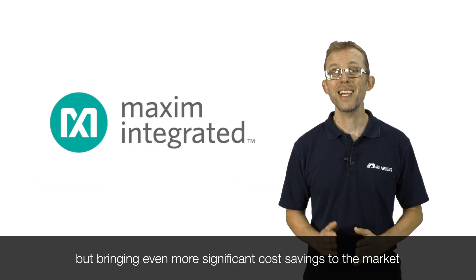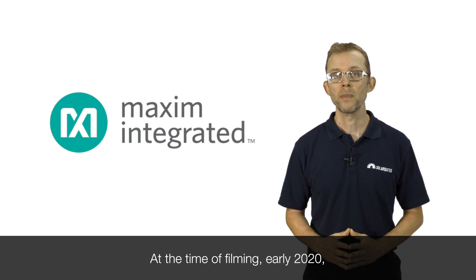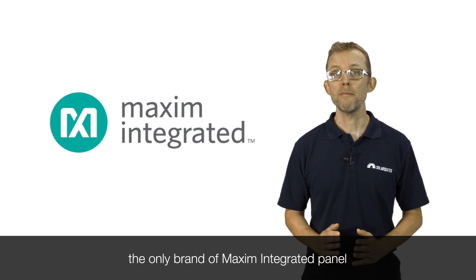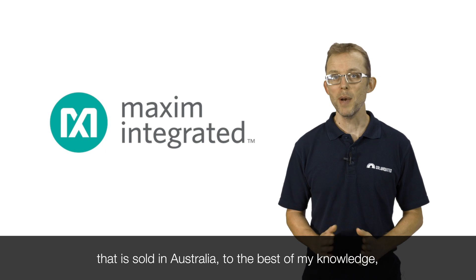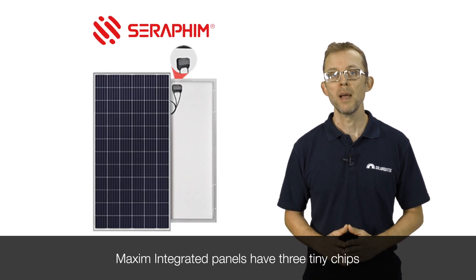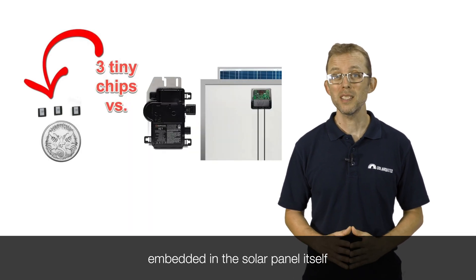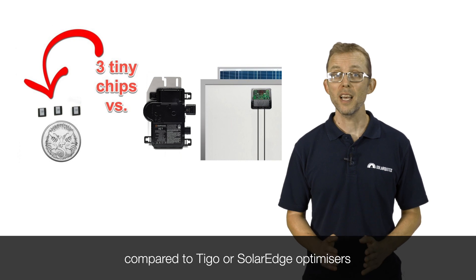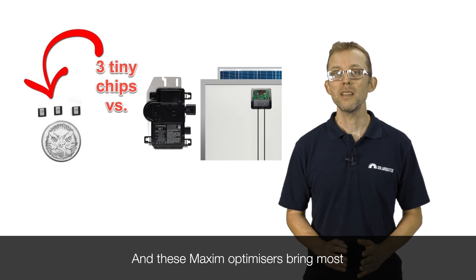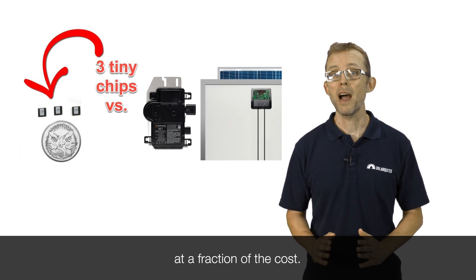Bringing even more significant cost savings to the market are Maxim integrated panels. At the time of filming, early 2020, the only brand of Maxim integrated panel sold in Australia, to the best of my knowledge, are the Seraphim MX panels. Maxim integrated panels have three tiny chips embedded in the solar panel itself, compared to Tigo or SolarEdge optimizers that are bolted onto the back of the panel. These Maxim optimizers bring most of the benefits of other optimizers at a fraction of the cost.